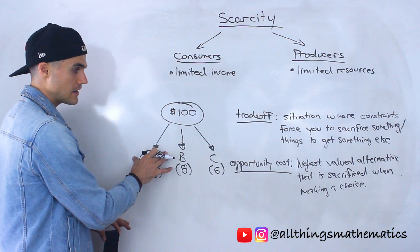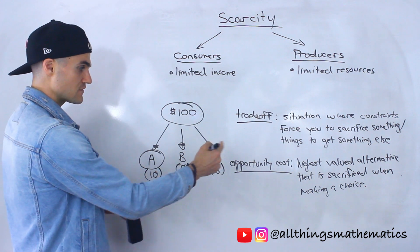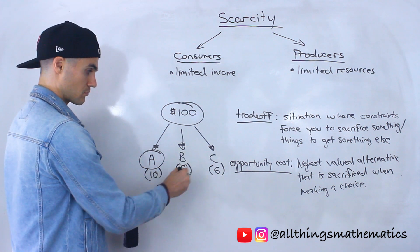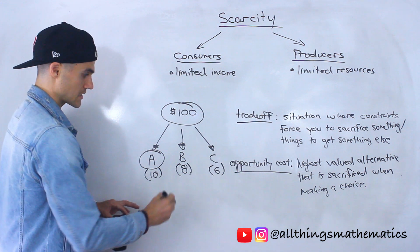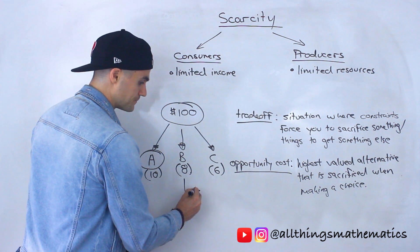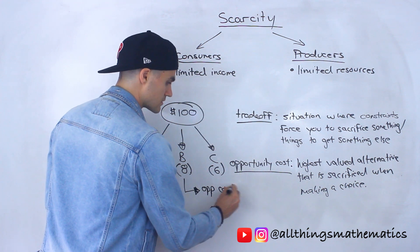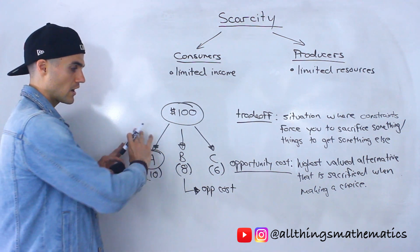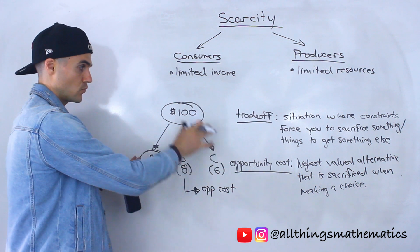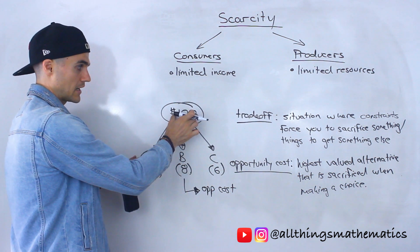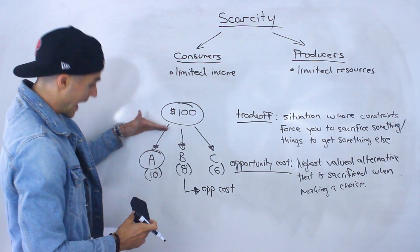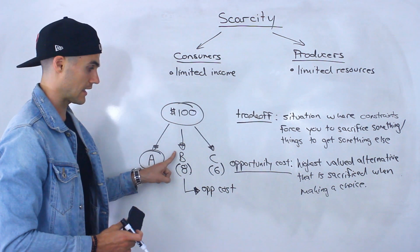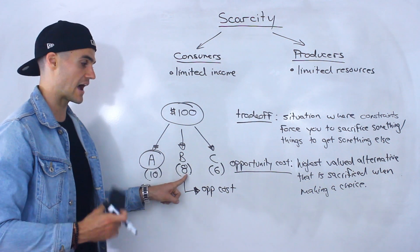The opportunity cost of picking product A is the highest valued alternative that is sacrificed when making a choice. So we made a choice to pick product A, and the opportunity cost is the highest valued alternative sacrificed. Out of B and C, which one has the higher value? Product B — it has a utility of 8, while product C has a utility of 6. So product B is the opportunity cost of choosing product A. Trade-offs is the set of different choices you face with limited income, and after you choose product A, the opportunity cost is product B because it's the highest valued alternative.